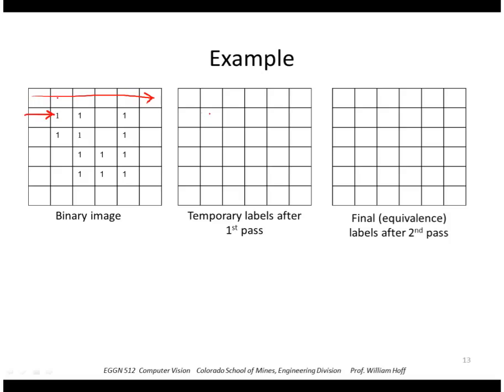Hit the next one. I see a label to the left of me, so I'll use his. That's a 1. Hit 1 here. Nothing to the above or to the left, so I make a new label called 2. Here, I see a neighbor above. I'll use his label. That's a 1. Same thing here. Same thing there. That would be a 2.